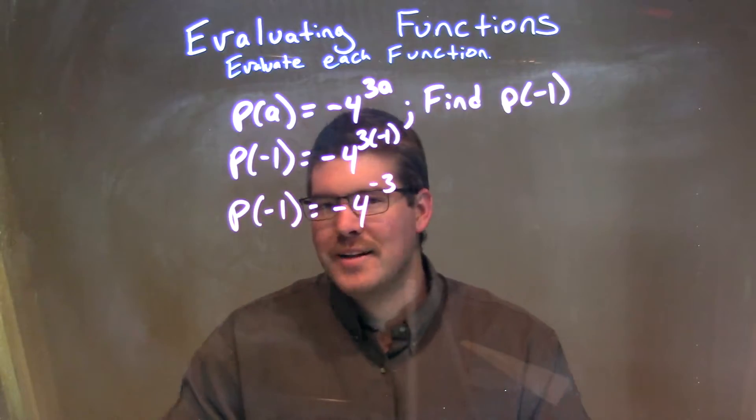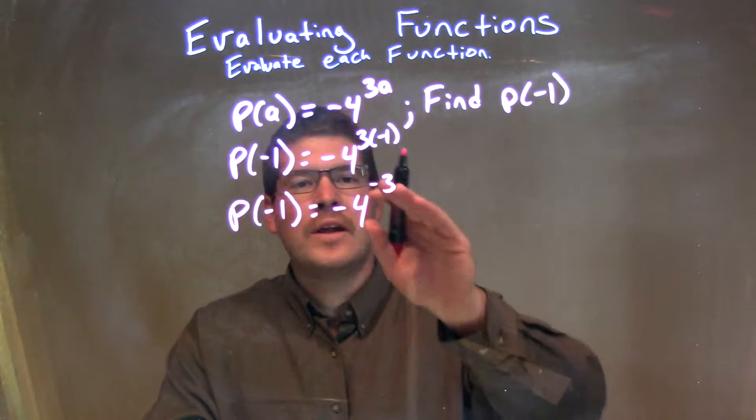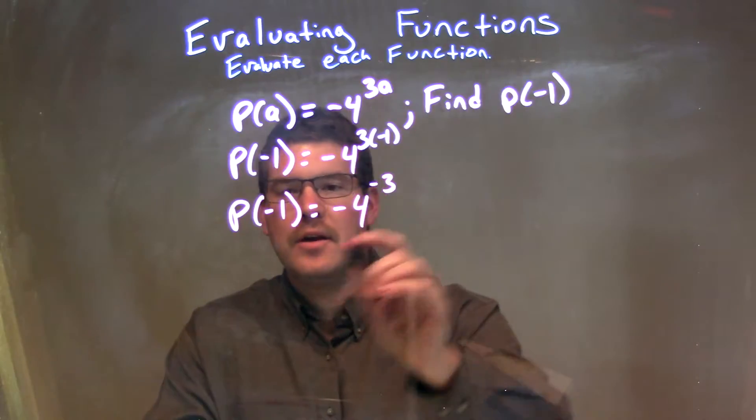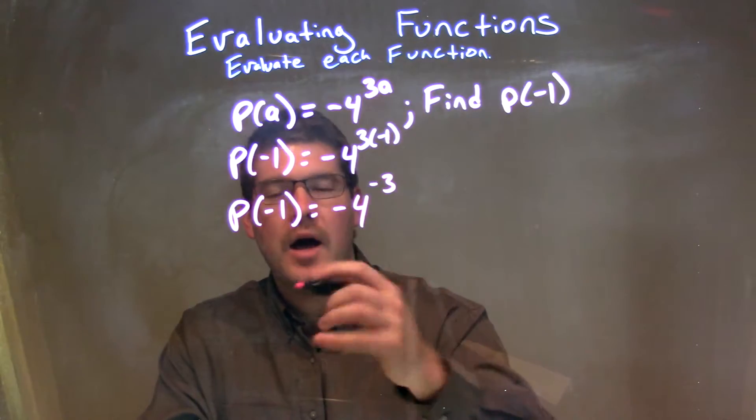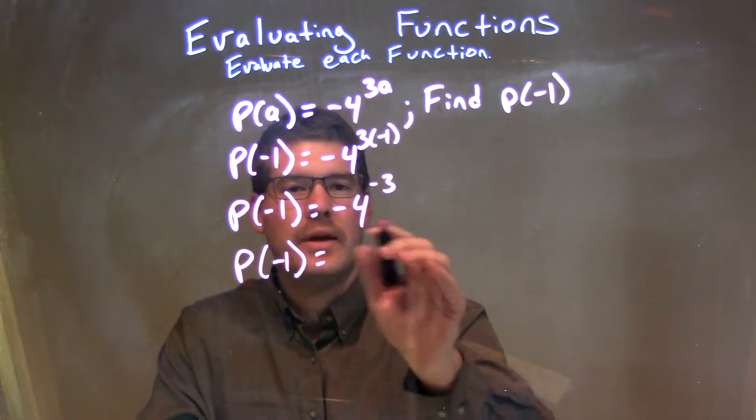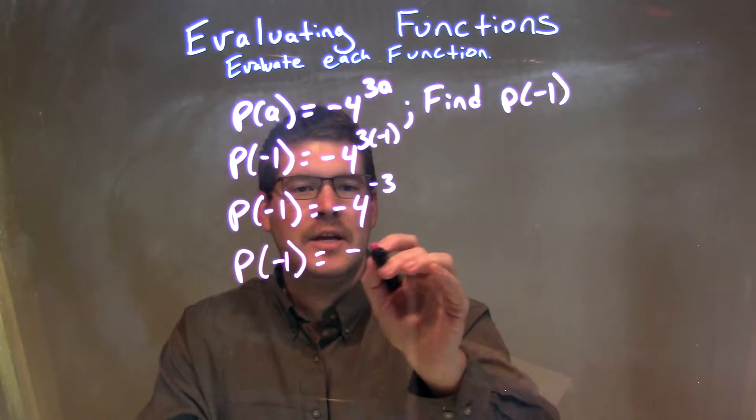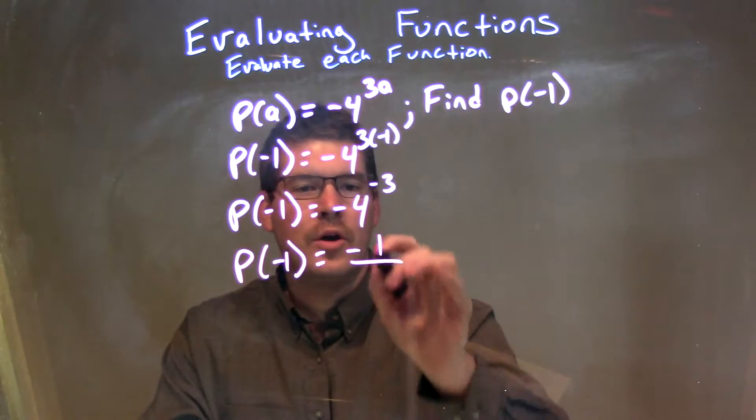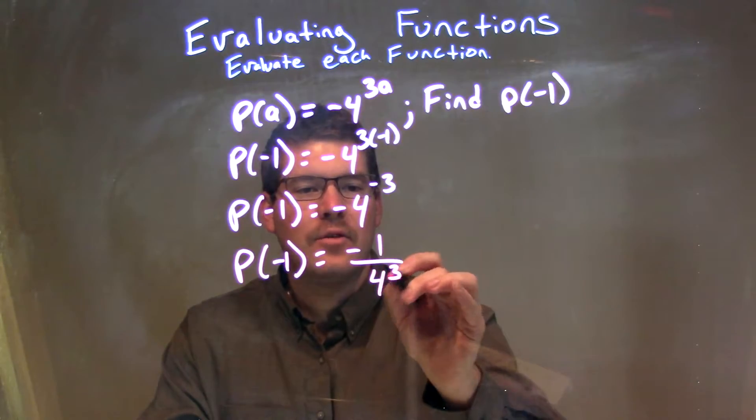Now here's where it gets tricky. We know a negative 3 exponent, can we rearrange this? We're going to keep it as a positive exponent. So if P of negative 1 is the same thing as the negative that's out here, we're going to leave it up top, negative 1 over 4 to the positive 3rd power.